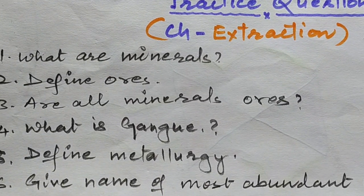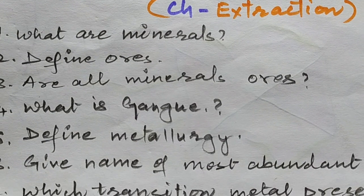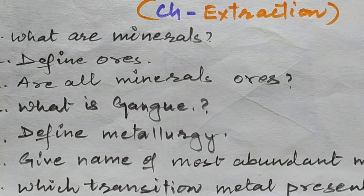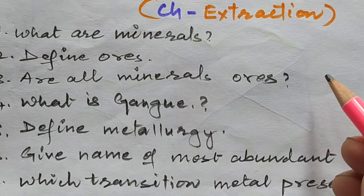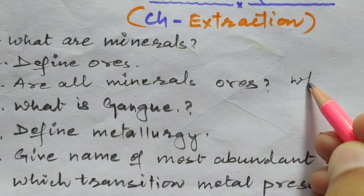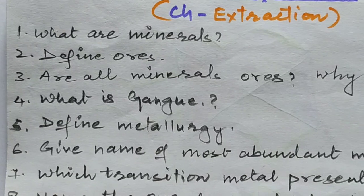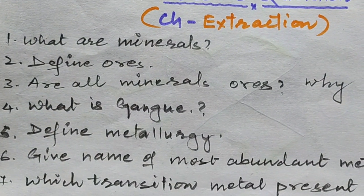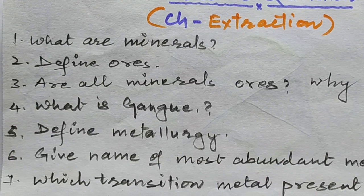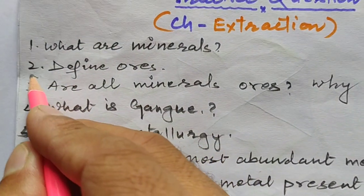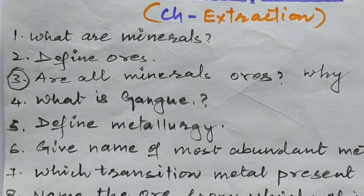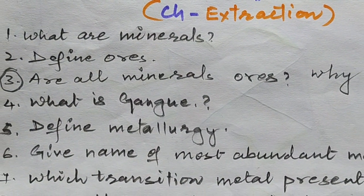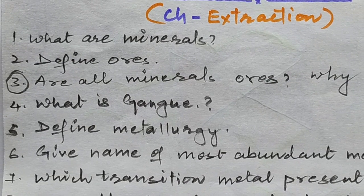One question asks: are all minerals ores, and are all ores minerals? Explain why. The third question, which is very important, asks: what is gangue? Give some examples of gangue.